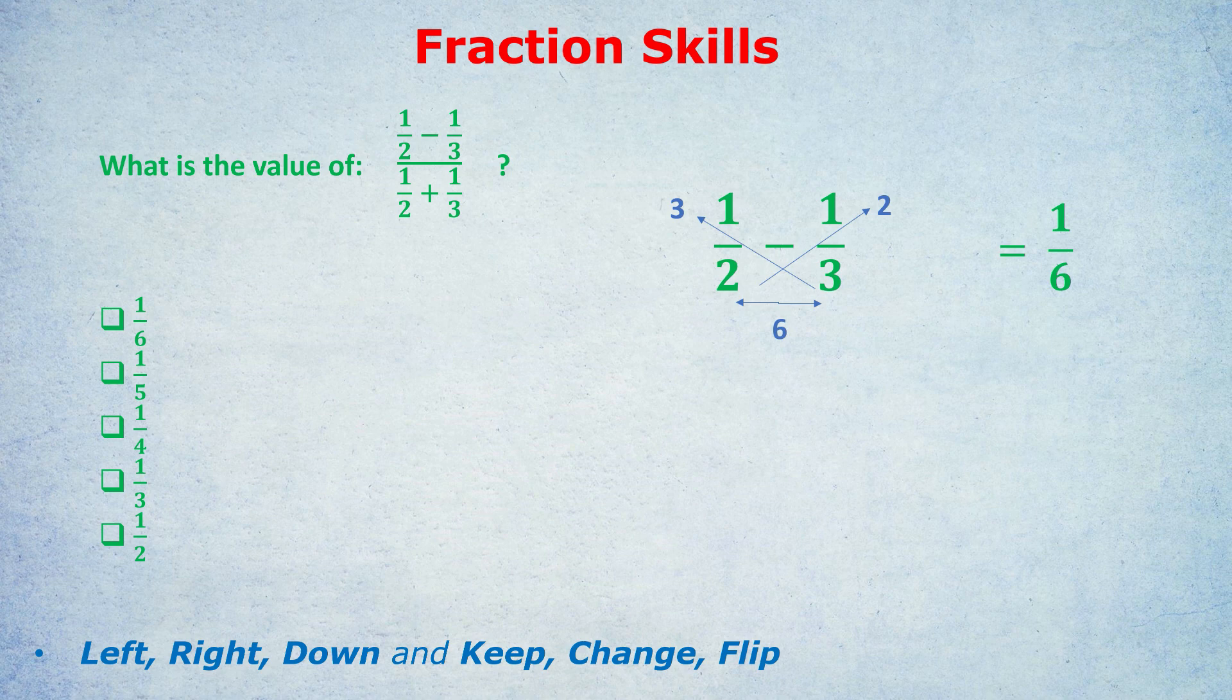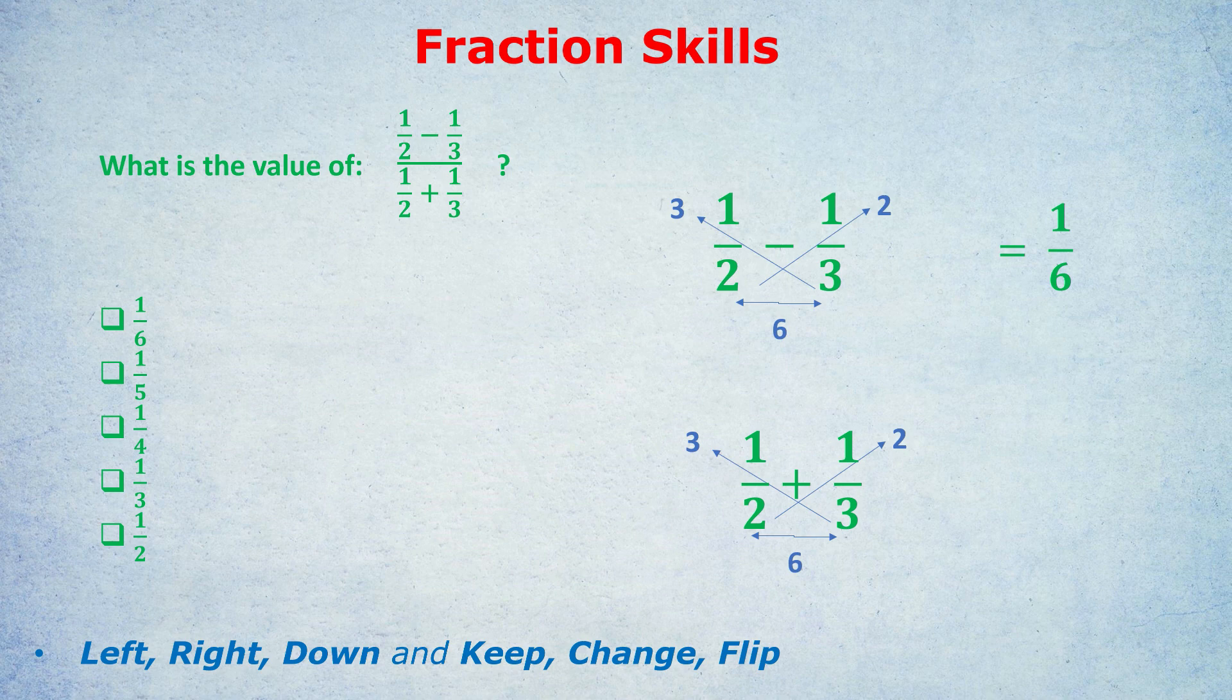Let's try that for adding fractions. Look at the denominator of the original question, a half plus a third. Let me demonstrate. Draw an arrow to the left, 3 times 1 is 3. Draw an arrow to the right, 2 times 1 is 2. Draw an arrow down at the bottom, 2 times 3 is 6. And what do we do with those two numbers at the top? Well, there's a plus sign between the fractions, so we do 3 plus 2, which is of course 5. So the answer is 5/6.